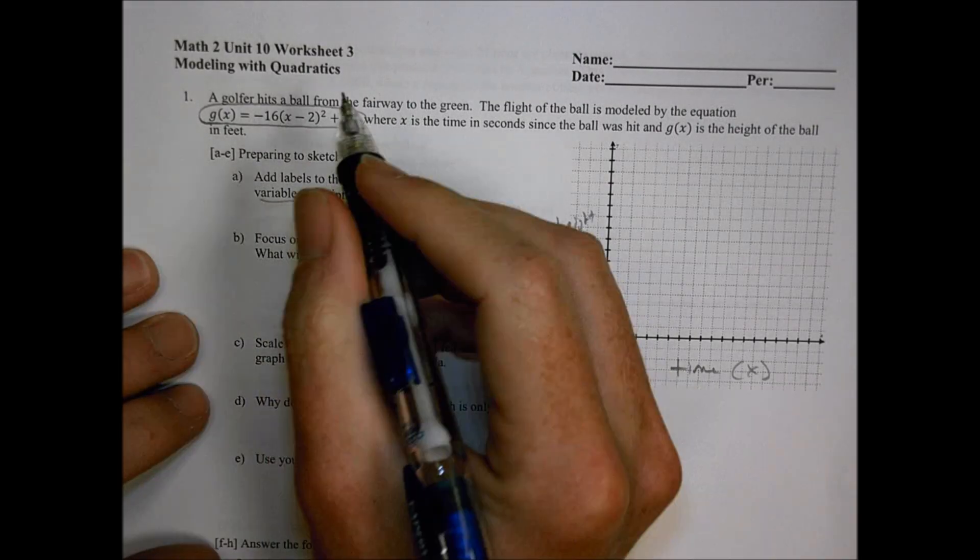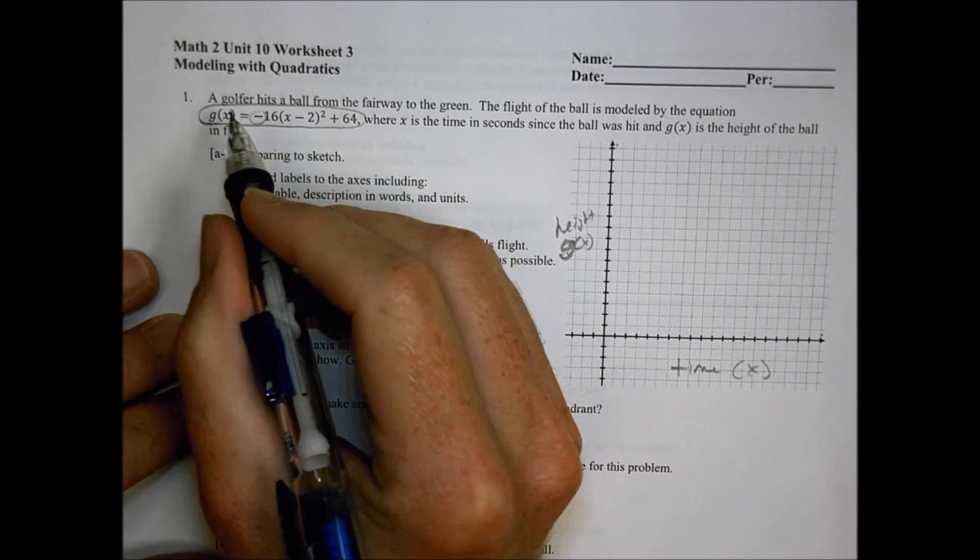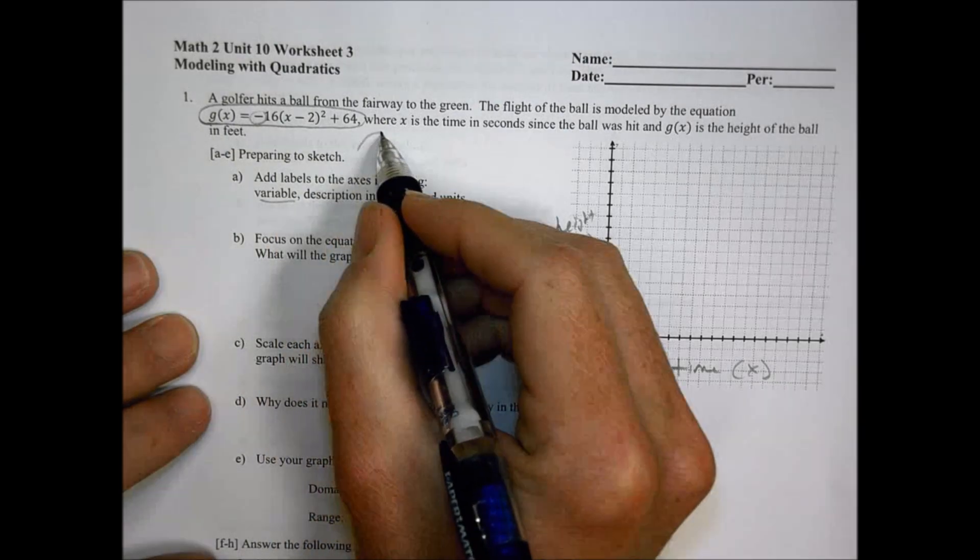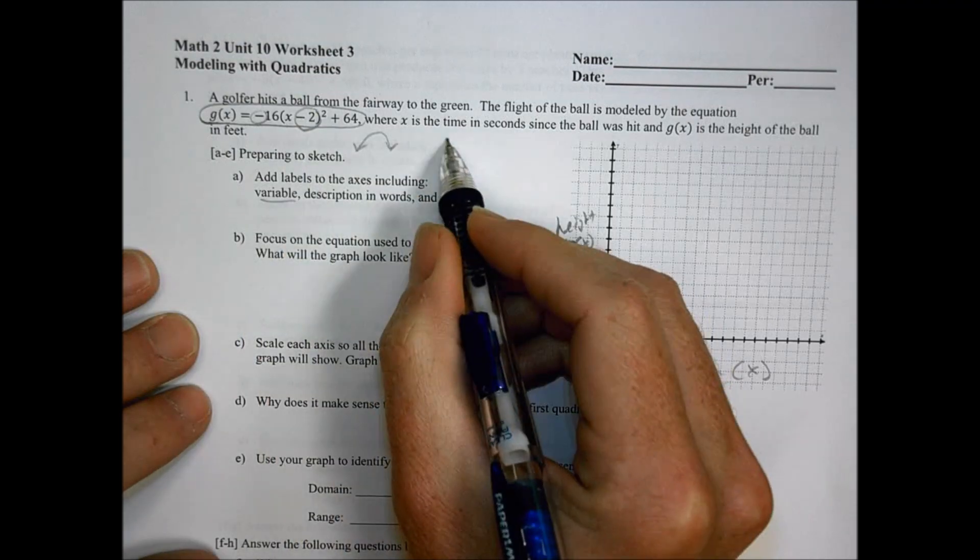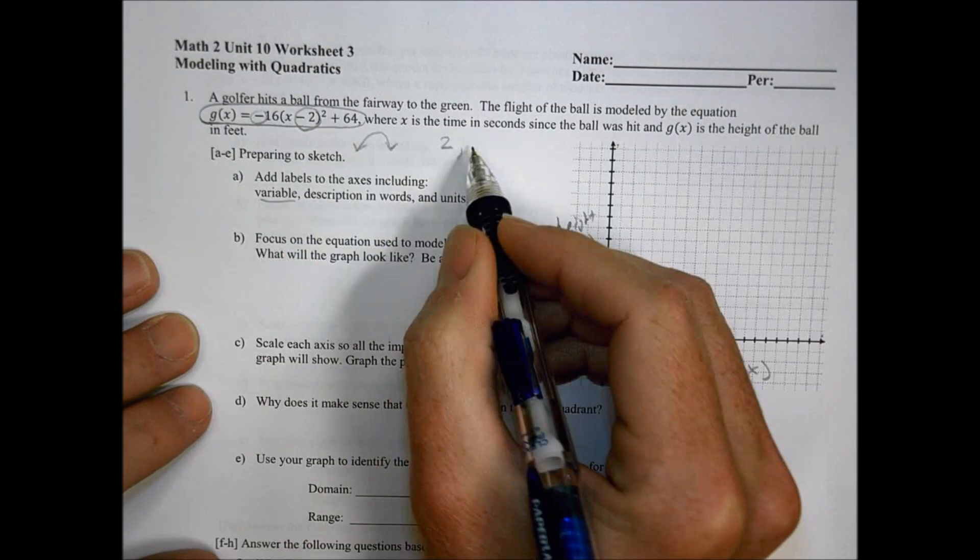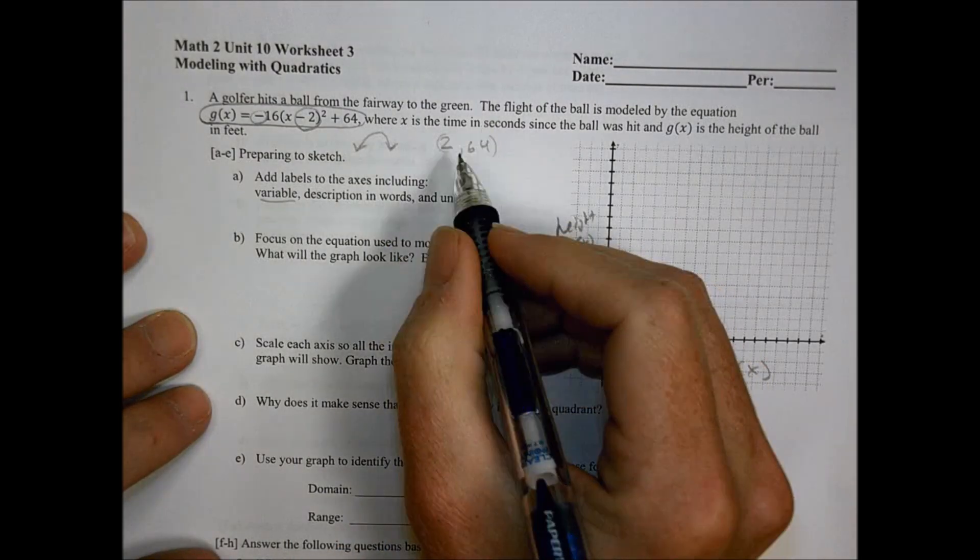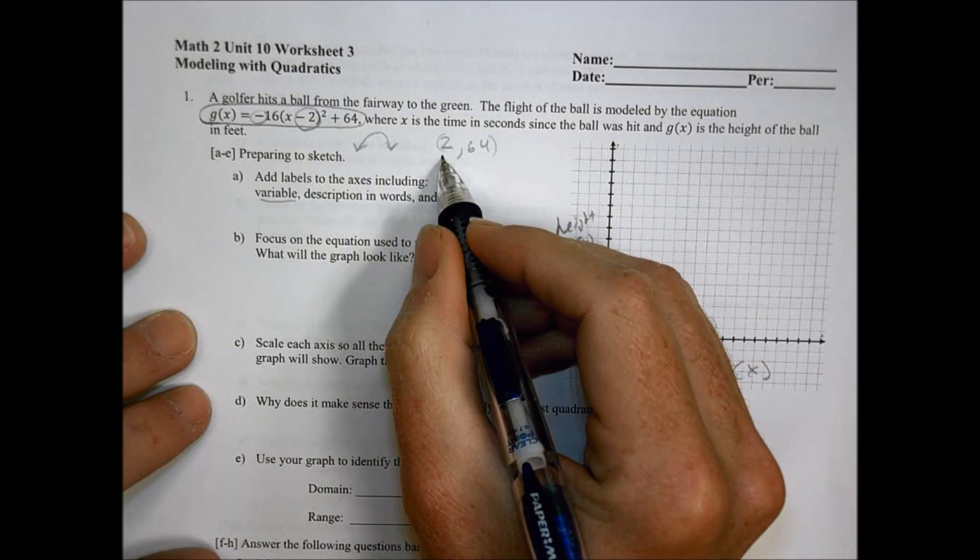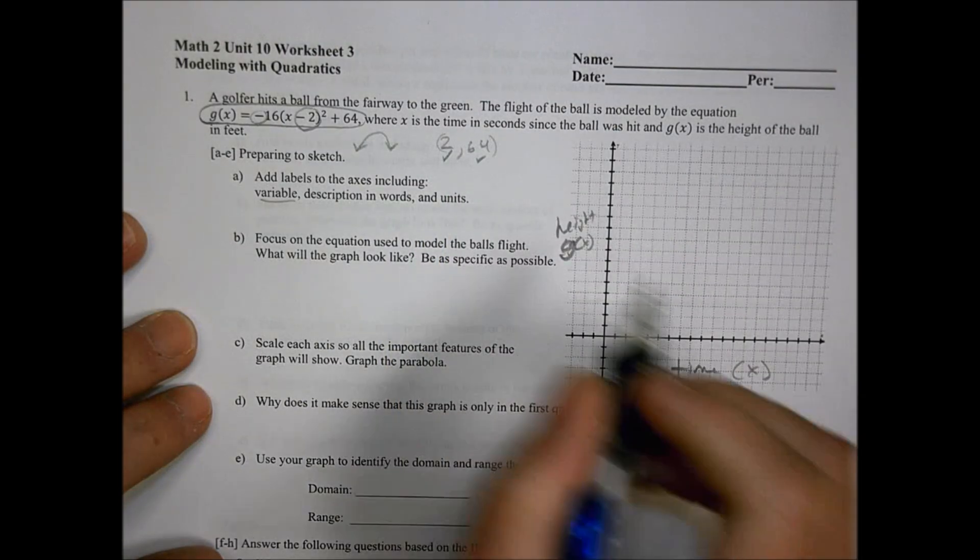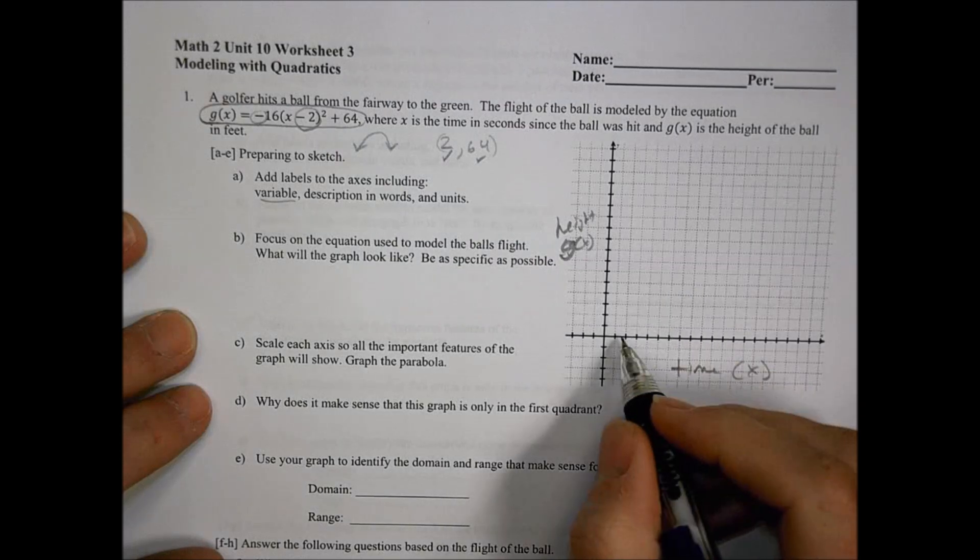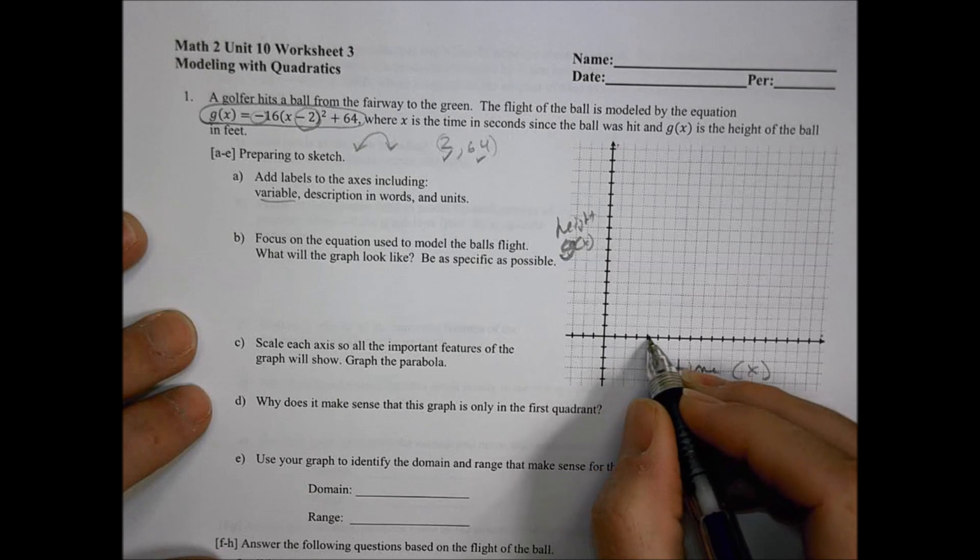So knowing what we know, we know that this has a negative in front of that value, which tells me it's going to be curving down. We know that the vertex is the opposite of that, which is at 2 comma 64. With these two pieces of information, I know that at 2 seconds the height is going to be 64.